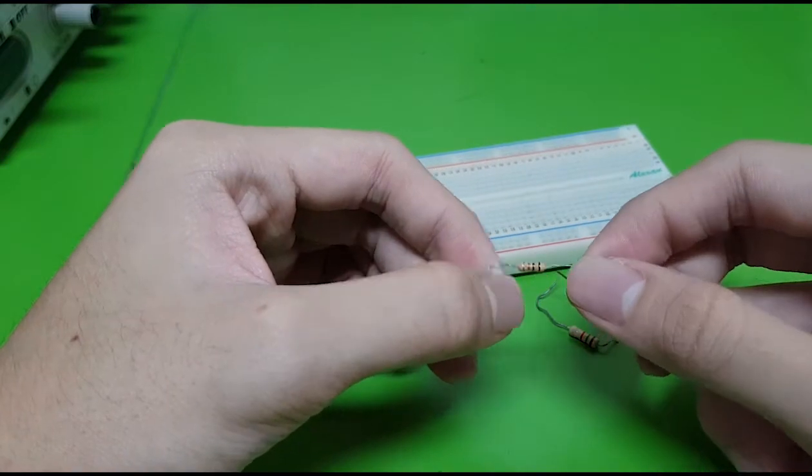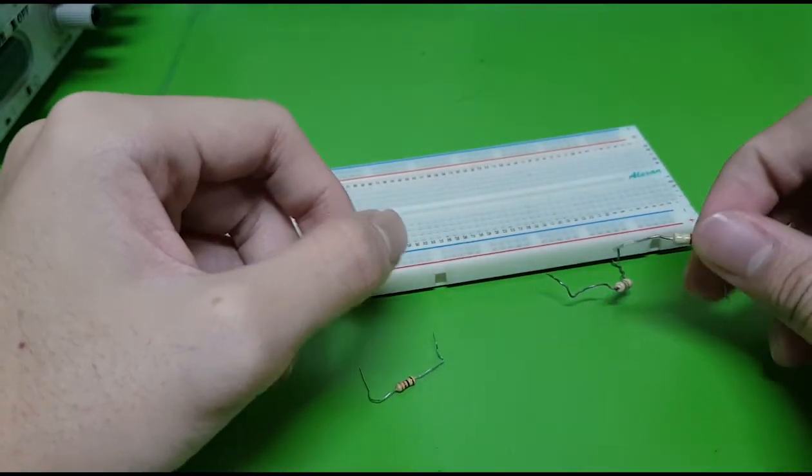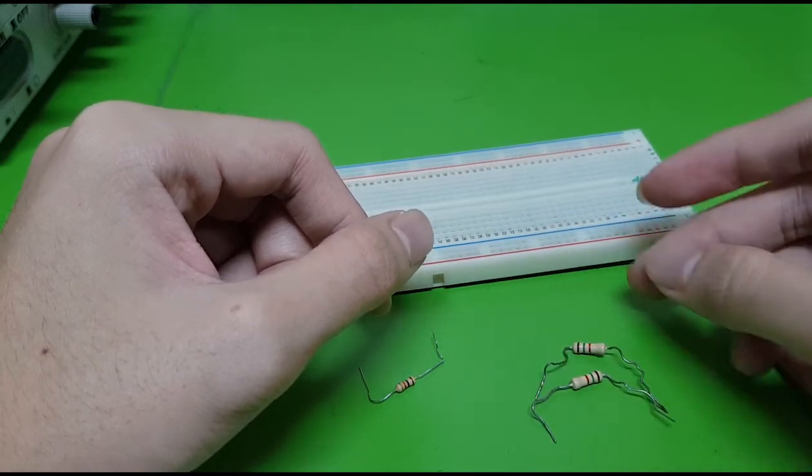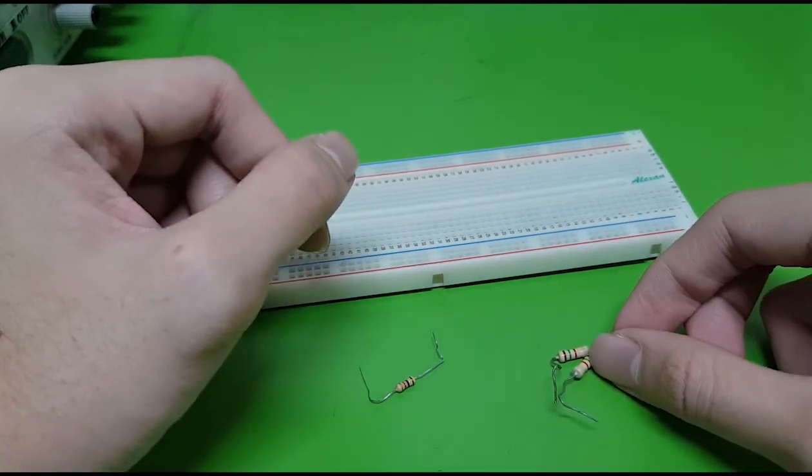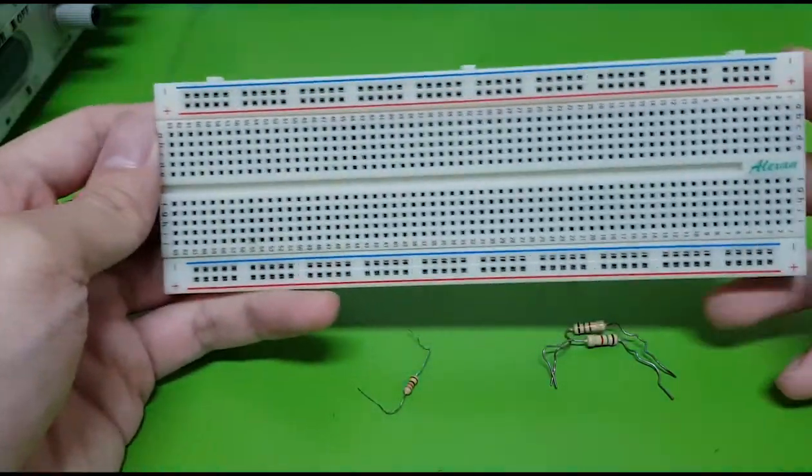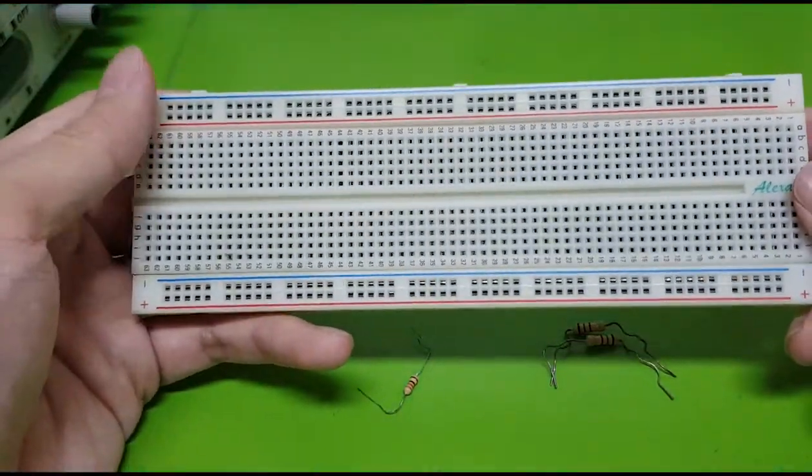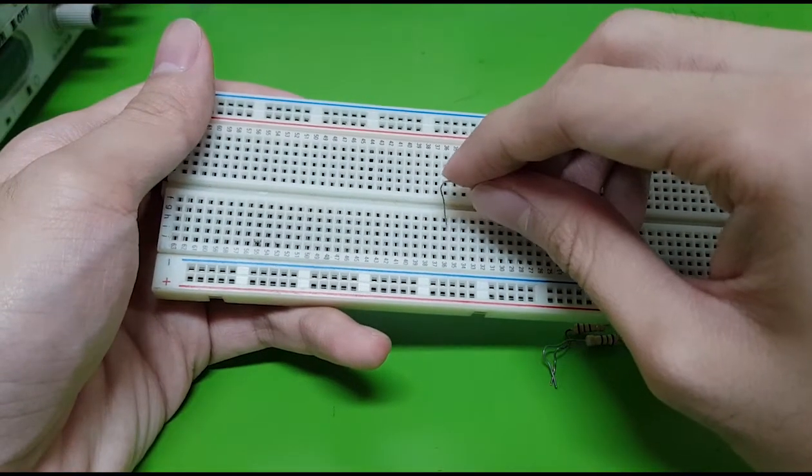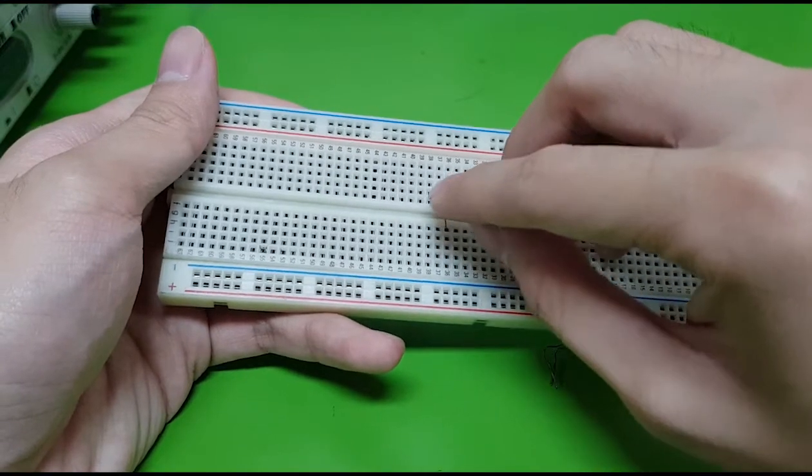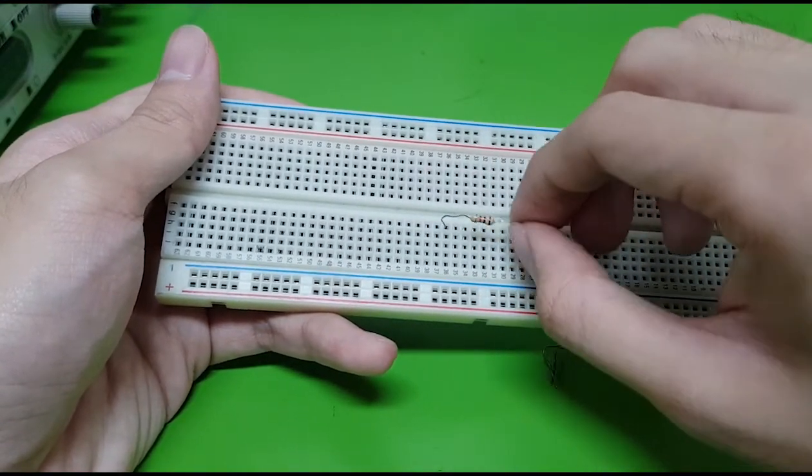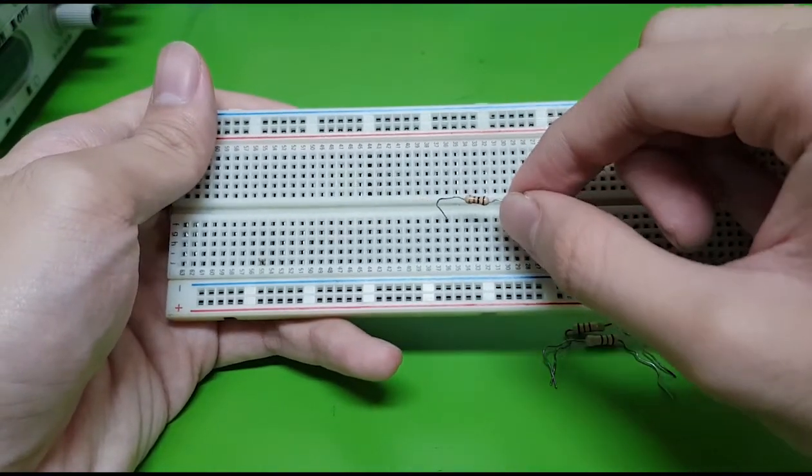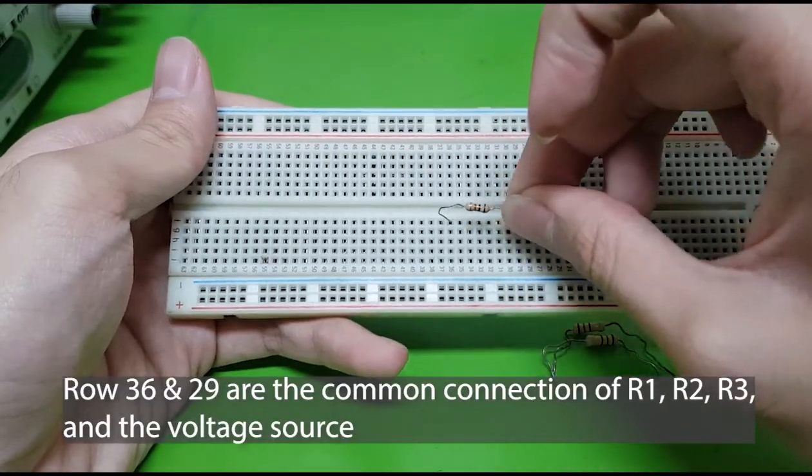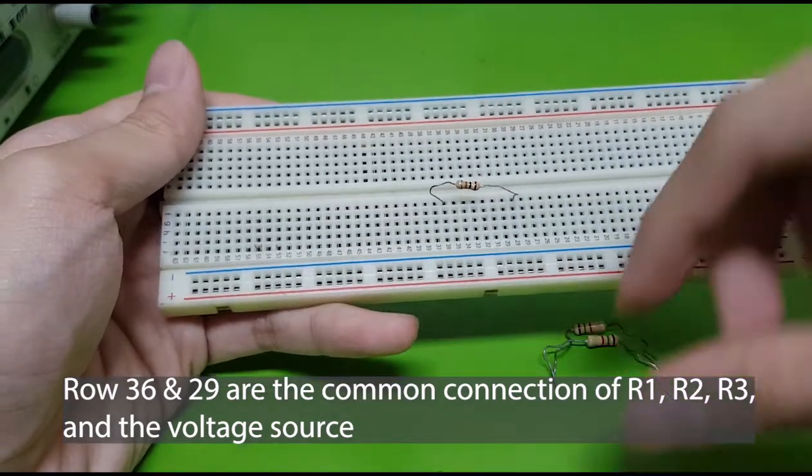So I have again, a 1 kilo-ohm resistor, then I have here two resistors with a value of 1.5 kilo-ohm. I'm going to use again this breadboard to create that circuit. First, I'm going to connect one end of my resistor 1, which has a value of 1 kilo-ohm, at somewhere here, at row 36. Then connect this one at row 29.